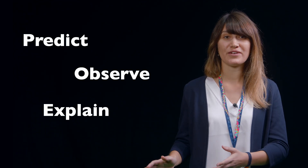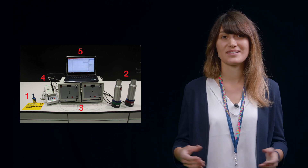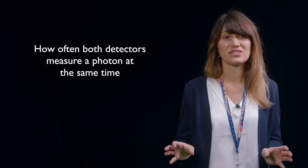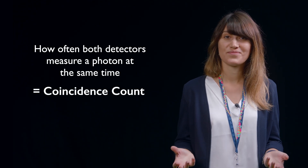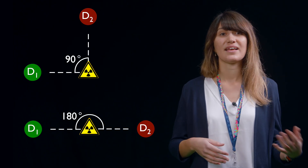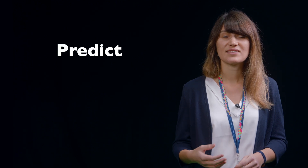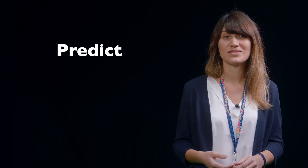Now you are ready for our second experiment. As in our first experiment, we will use the predict-observe-explain method. We will measure photons coming from the sodium-22 source with our measurement software in coincidence mode. That means we will wait 100 seconds and count how often both detectors measure a photon at the same time. We will call this number the coincidence count. And we will compare two different angular configurations, namely 90 degrees and 180 degrees between one detector, the source, and the second detector. For which setup do you expect a higher coincidence count? Make a prediction based on your knowledge about the transformation process of sodium-22.